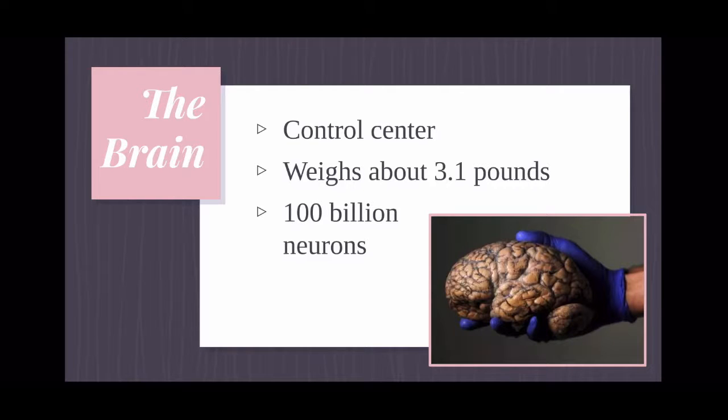The average brain weighs about three pounds. That is an actual picture of someone holding a human brain. That's about the size of it. A regular average human brain consists of about 100 billion neurons. This is where you store all of your memories, all of your intelligence. This is where your body is able to tell you if you're hungry or thirsty. All of that information is stored in these 100 billion neurons.